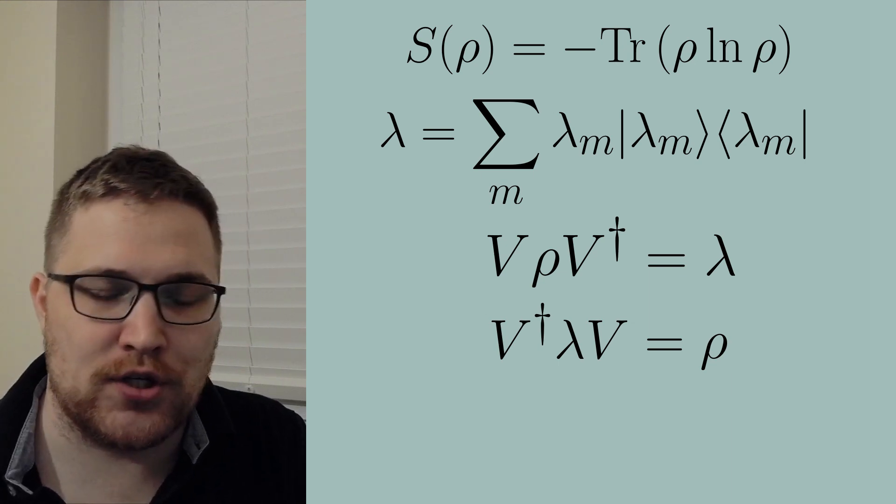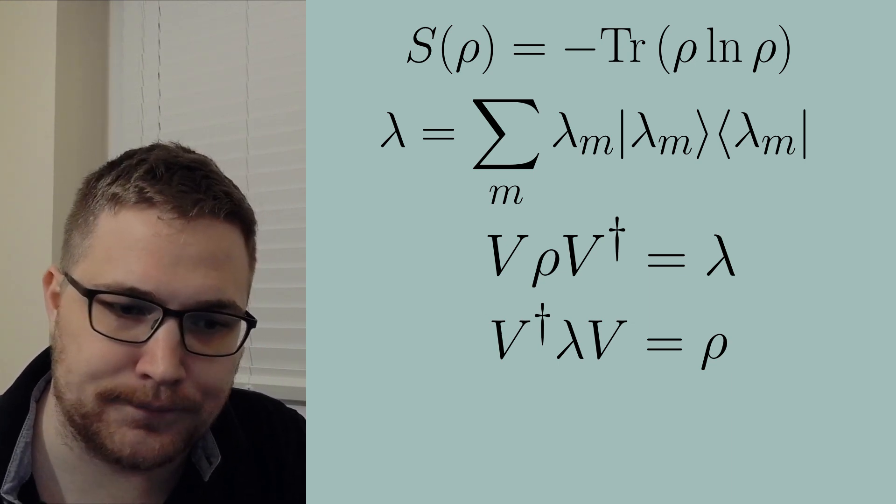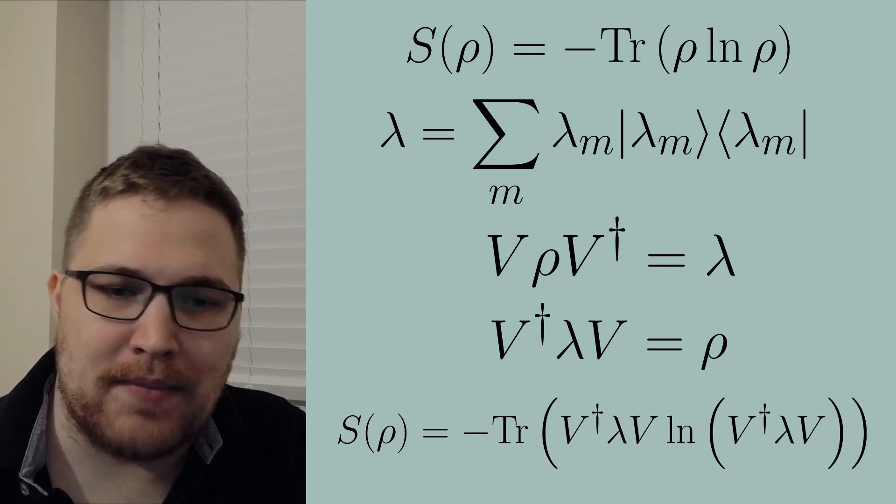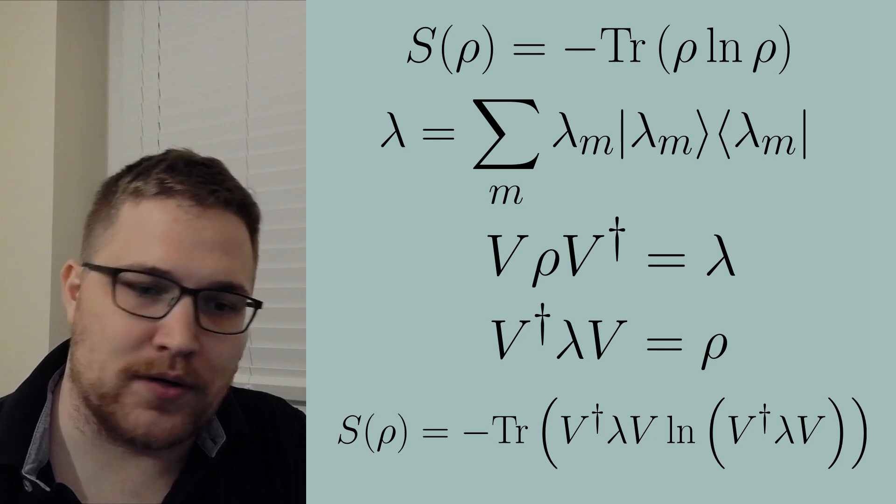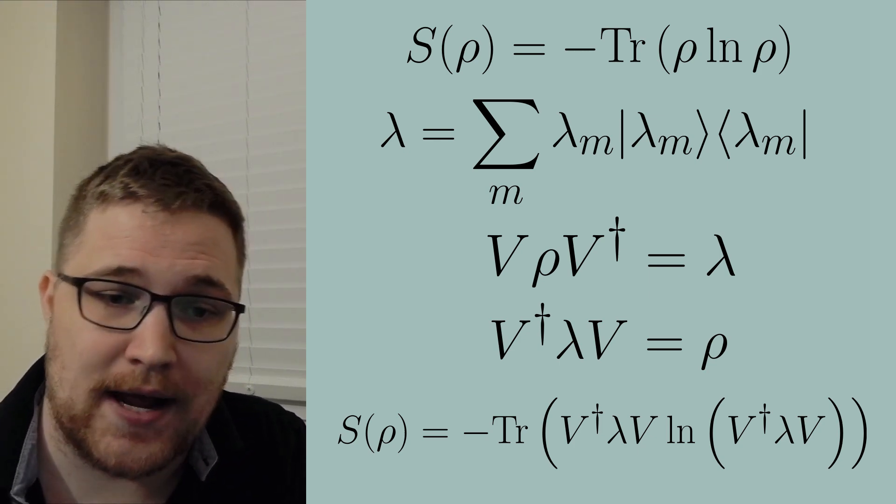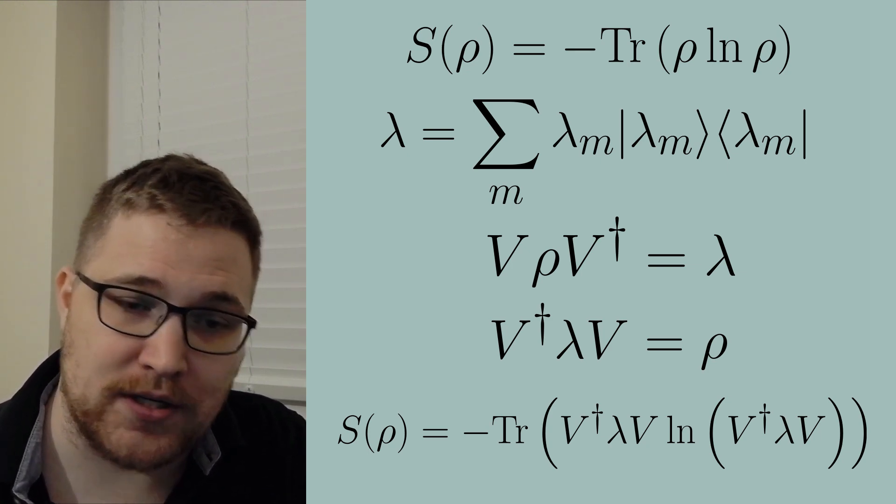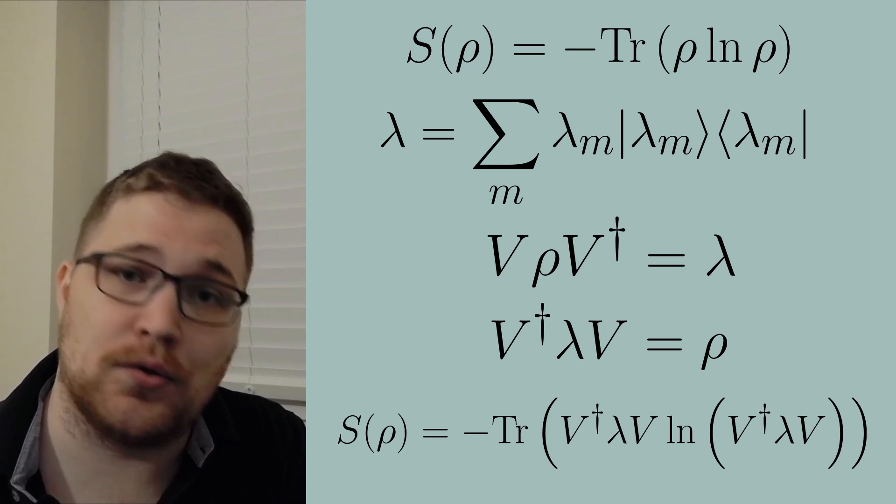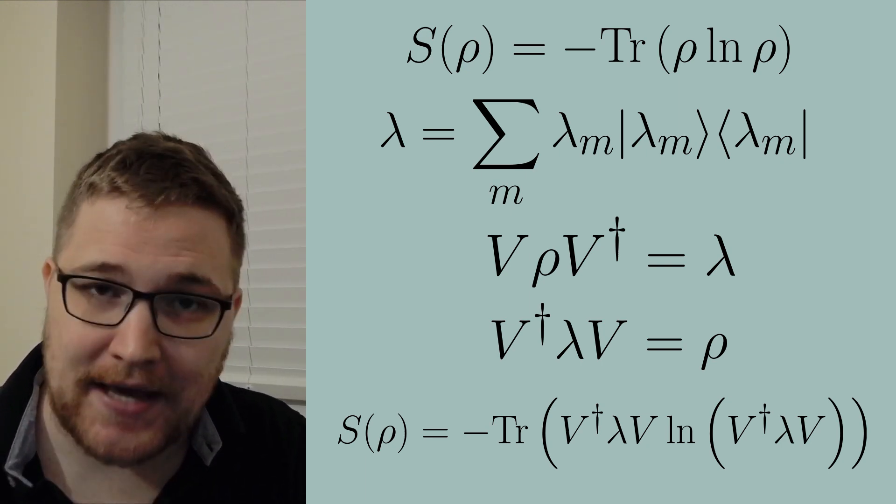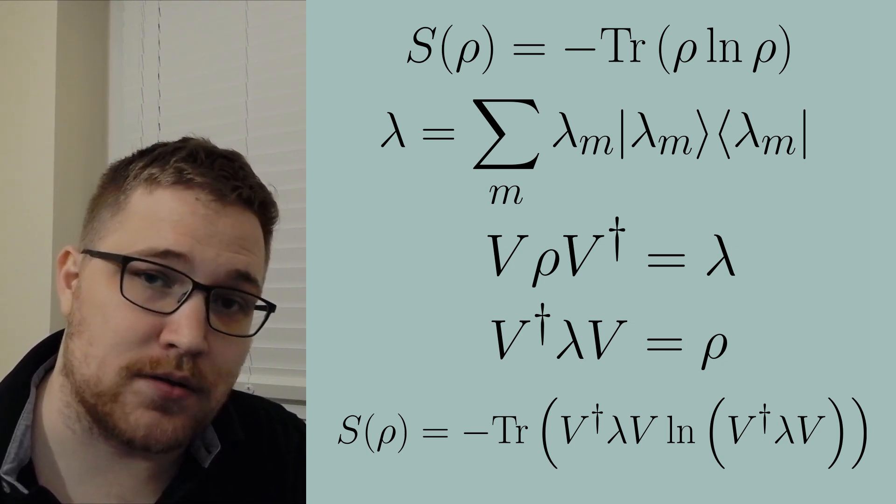So plugging this transformation into the von Neumann entropy gives the following expression. Now it's not immediately obvious that we can take the unitary matrices out of the matrix logarithm but if we could take the unitary matrices out of the matrix logarithm we see that we could simplify our expression inside of the trace and cancel all of the unitary matrices. So let's see why precisely we can take the unitary matrices out of the matrix logarithm.